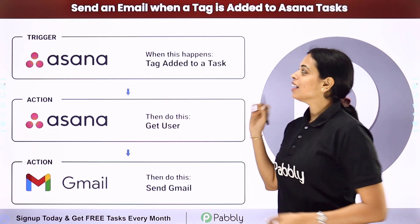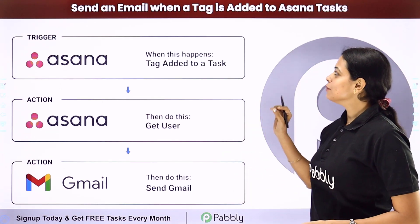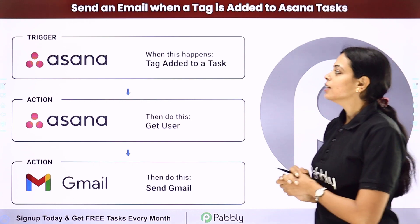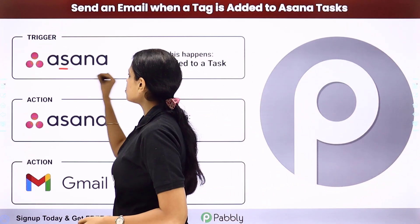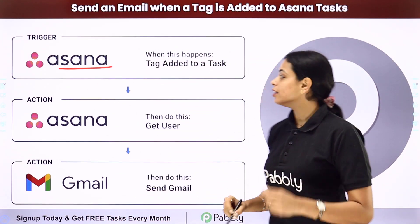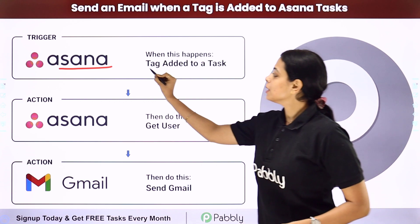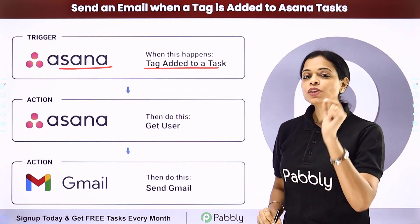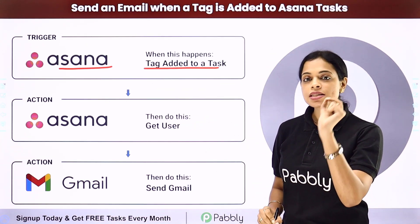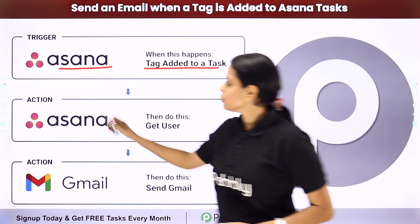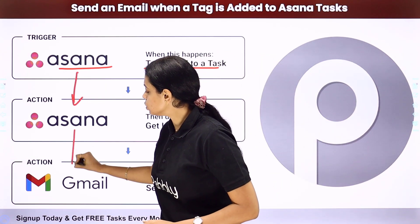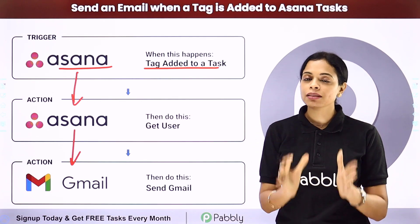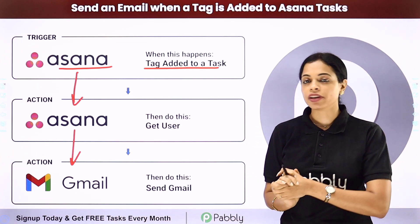In this video we are going to see how to send an email when a tag is added to Asana tasks. So let's say that you are using Asana as a project management tool and here every time a tag is added to an existing task, you want an email to be sent to the assignee of that task. For this you will have to set up some integration between Asana and Gmail, and the same thing can be done using Pably Connect software.